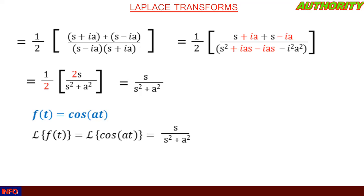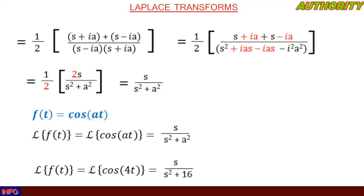Note that a can assume any number. For instance, the Laplace transform of cos(4t): here a is 4, so we have s all over s² plus 4², which is s / (s²+16). So the Laplace transform of cos(4t) equals s / (s²+16).